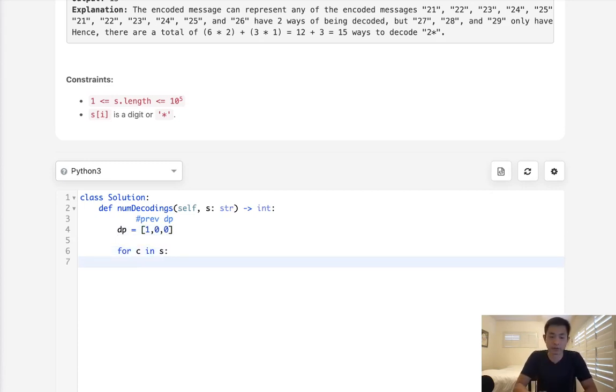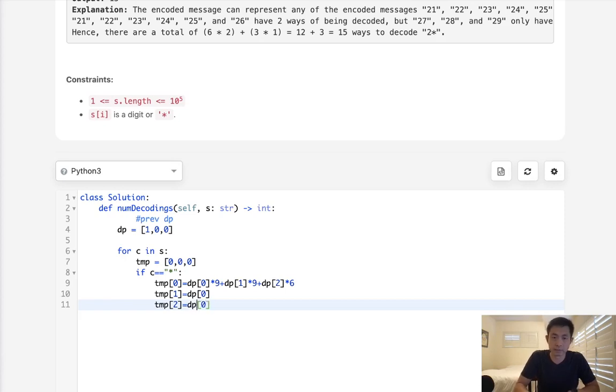There's going to be two main cases that we need to take care of. First, I'm going to create a temporary DP array. If C equals star, we'll set a couple of things. So temp zero at this point, we will take our DP of zero and multiply it by nine. We'll also take our DP of one and add that, multiply that by nine, and take our DP of two and multiply this by six. Now temp one, since this is a star, that means one and two are both possible.